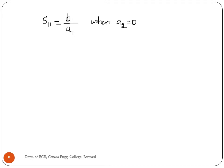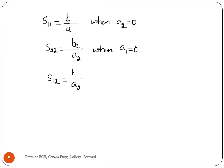The physical significance of the S-parameters can be described as follows. S22 = B2/A2 when A1 = 0. S12 = B1/A2 when A1 = 0. S21 = B2/A1 when A2 = 0.